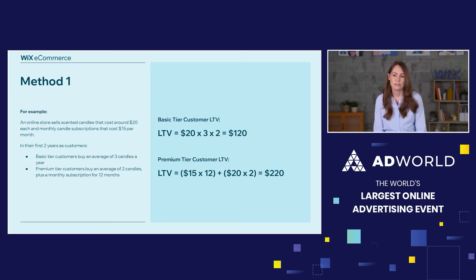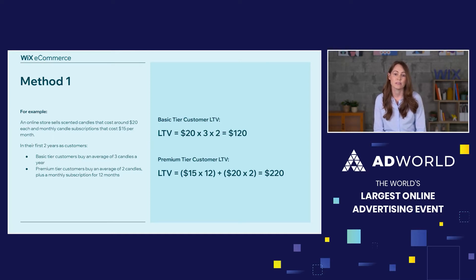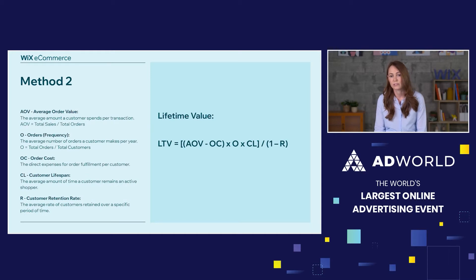At this point, you're probably saying there are things not being taken into account here, because my customer might be spending that money but that's not what I'm actually earning — I have fulfillment costs, plus I don't retain all of my customers. And you'd be absolutely right. So let's move on to method two, which does account for those variables.